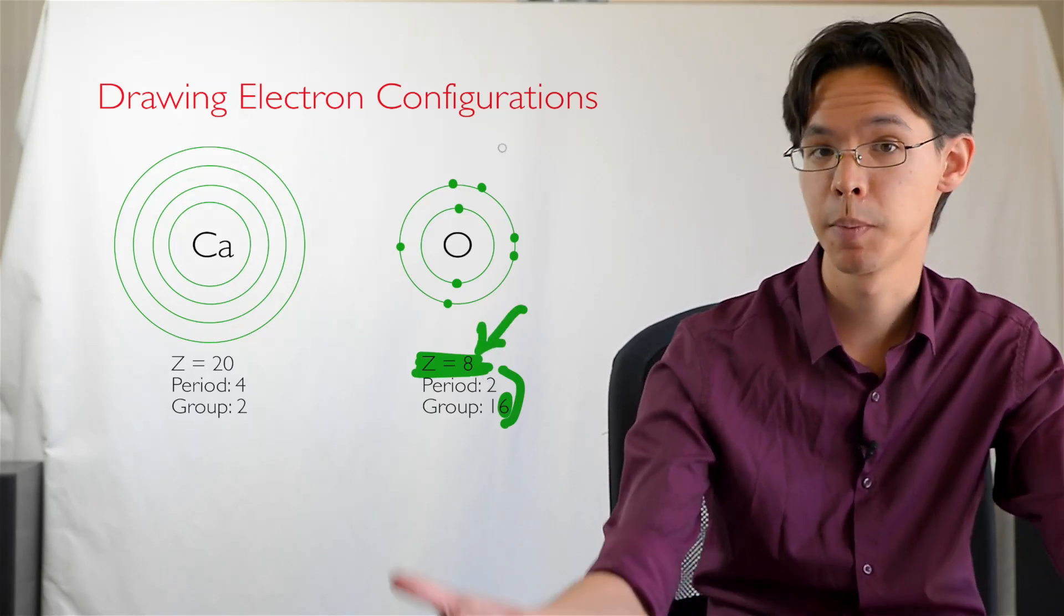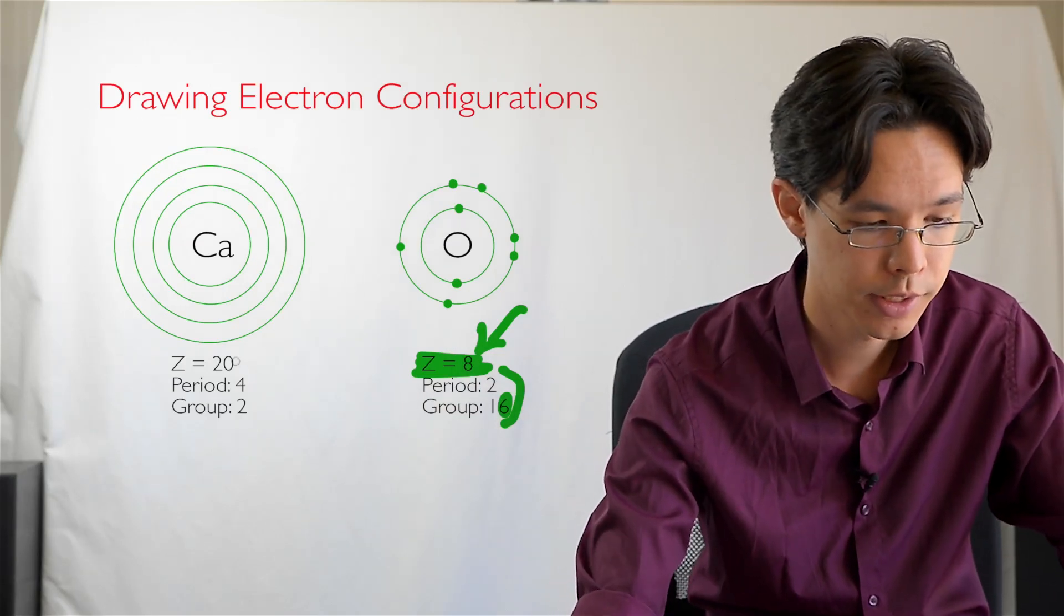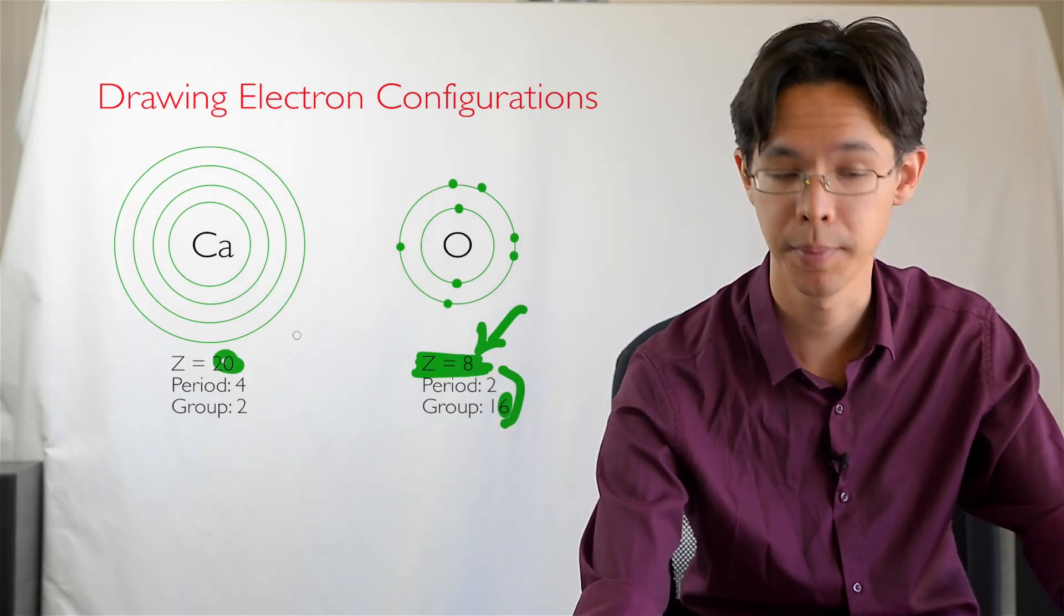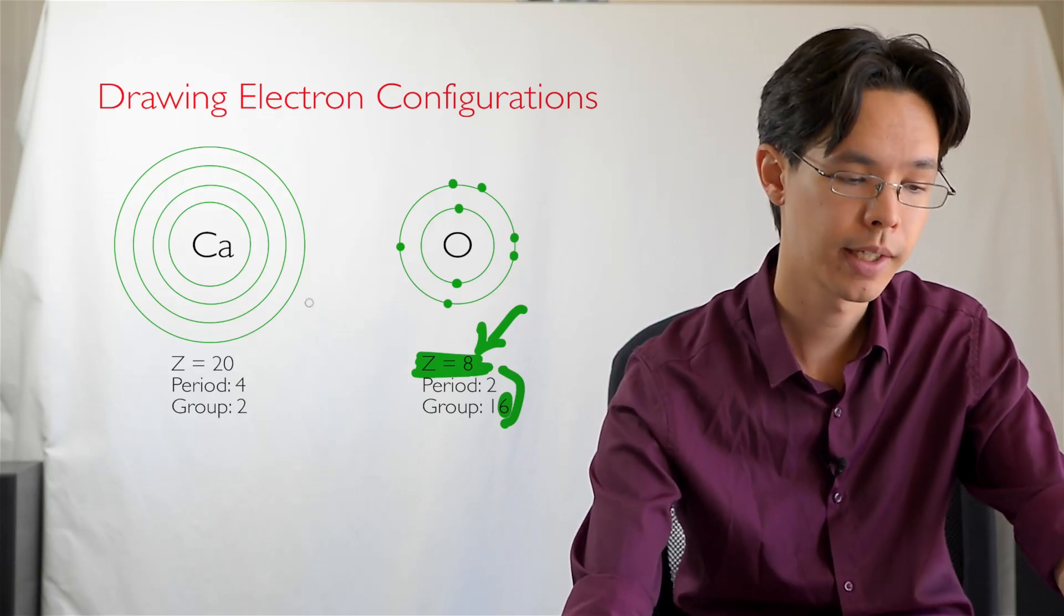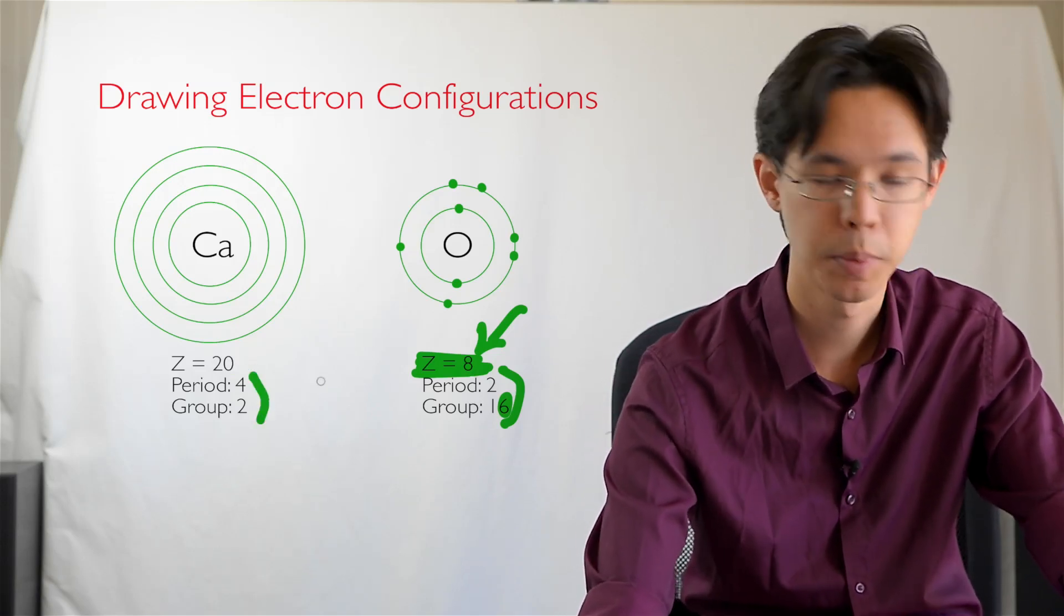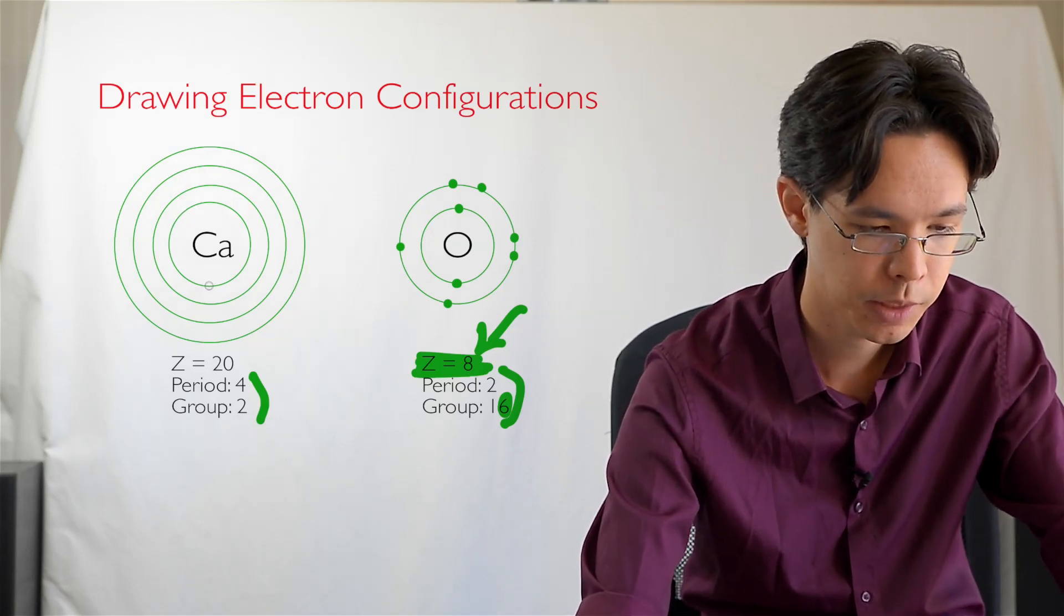So let's apply it to something a little bit more complex, a bigger atom, such as calcium. Calcium here has 20 electrons. That will take us some time to count all the way out, doing it manually. But if we do this trick by looking at the period number and the group number, we can do it quite quickly.